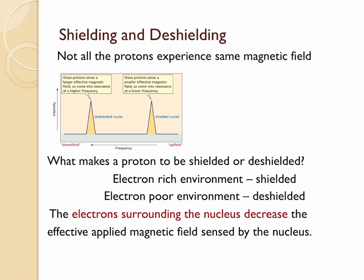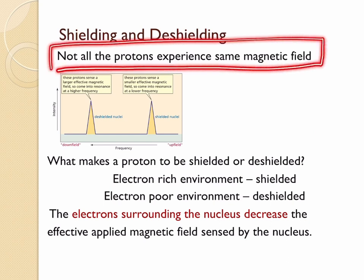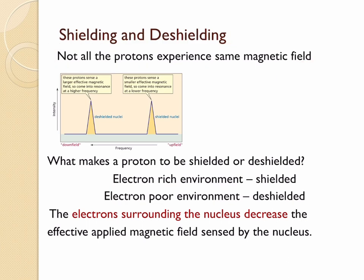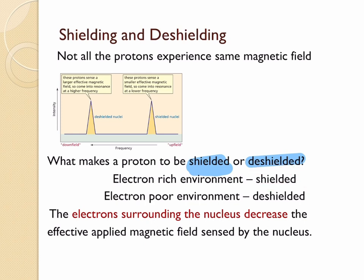The key thing in NMR is that not all protons are going to experience the same amount of magnetic field. There are some protons which experience a greater magnetic field and some others which experience only a smaller magnetic field. This is because of the electrons surrounding the nucleus. Protons in an electron-rich environment are shielded from the applied magnetic field and take very low energy to come to resonance, whereas protons in an electron-poor environment are deshielded and take more energy to come to resonance with the radio frequency radiation.